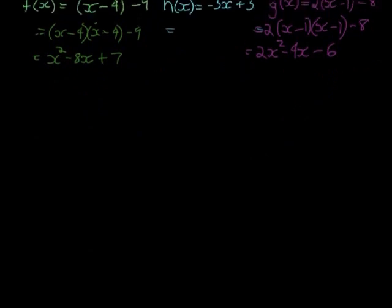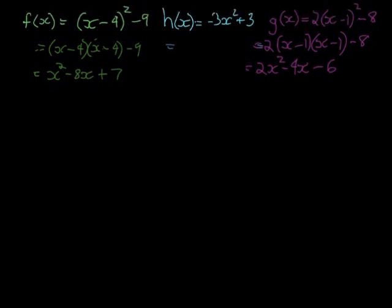So this second one, actually, we notice it is already in the form ax squared plus bx plus c. The only difference is that the b value, so we have negative 3x squared plus 0x plus 3.